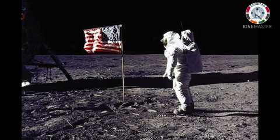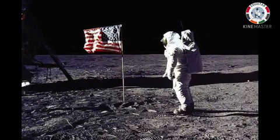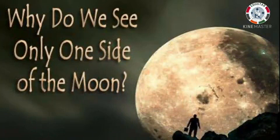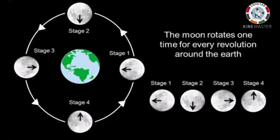It is the only object in space that man has set foot on. We always see only one side of the Moon. This is because the time the Moon takes to rotate around the Earth and the time it takes to rotate around its own axis is the same.